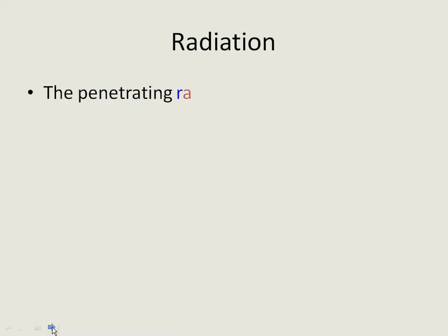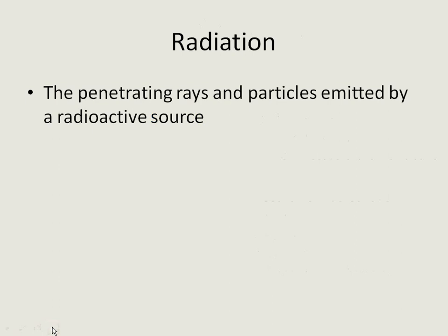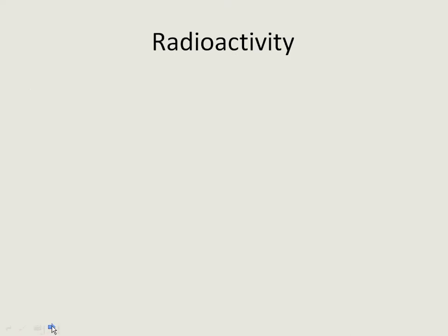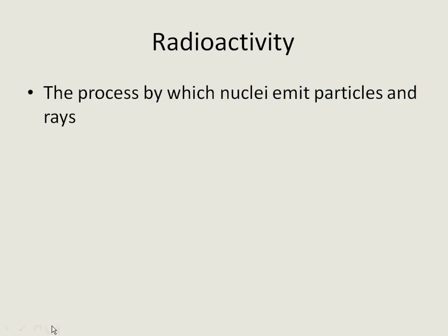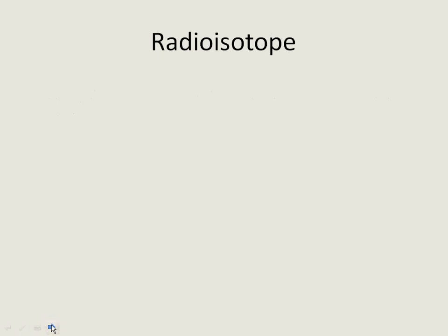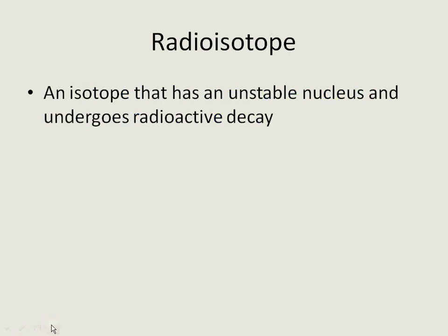Some definitions. Radiation: the penetrating rays and particles emitted by a radioactive source — we're going to learn what those rays and particles are. Radioactivity: the process by which nuclei emit particles and rays. We've learned about isotopes; now we're going to look at radioisotopes — an isotope that has an unstable nucleus and undergoes radioactive decay.